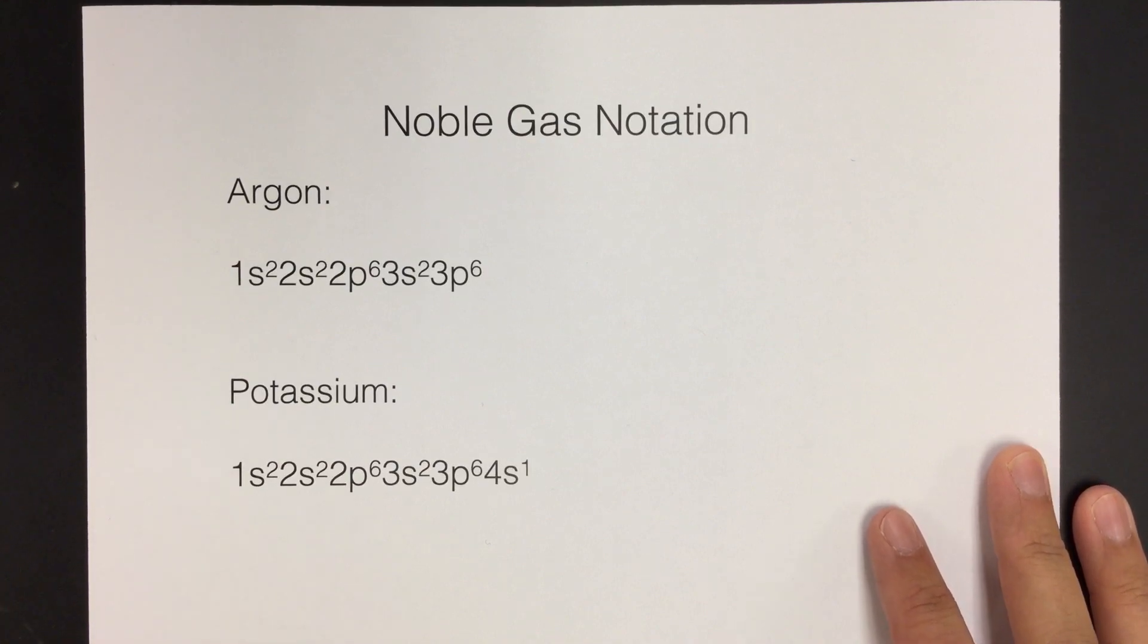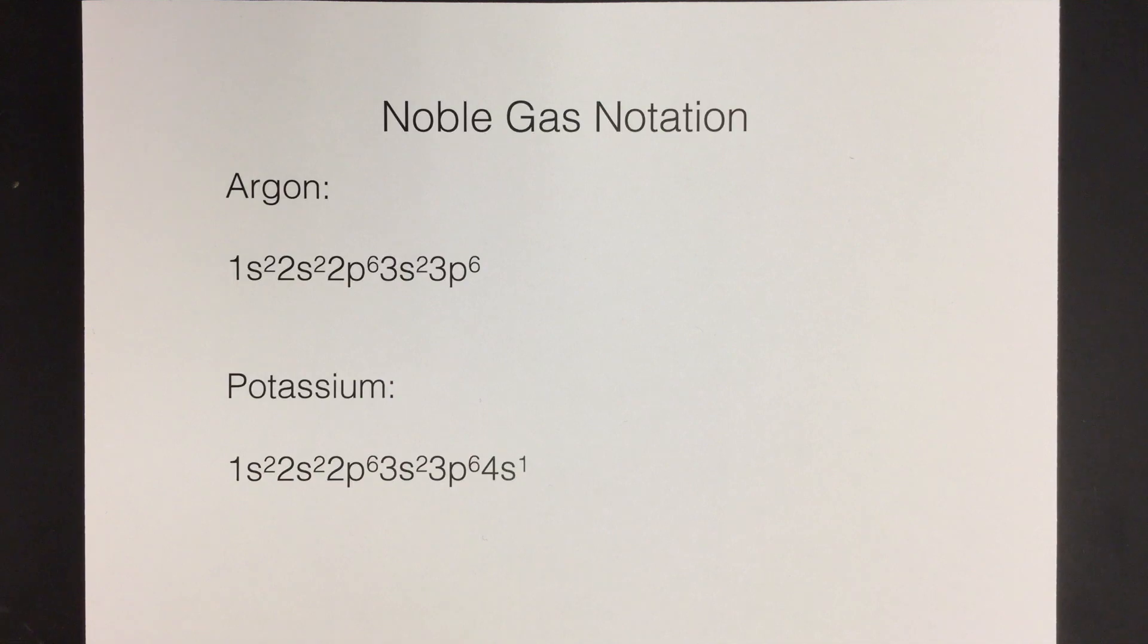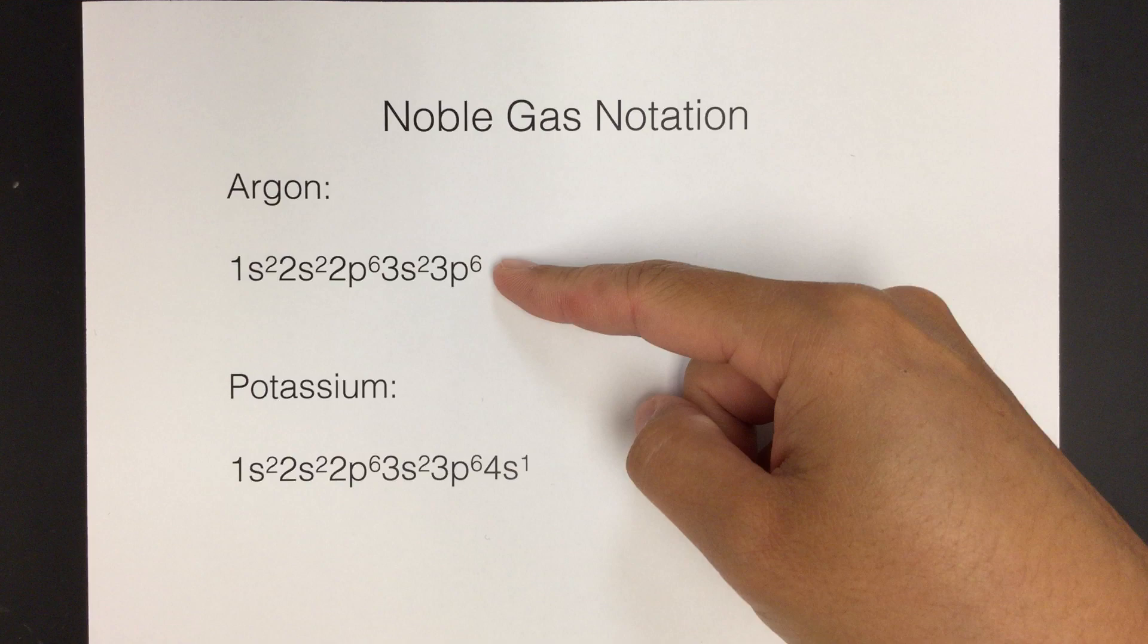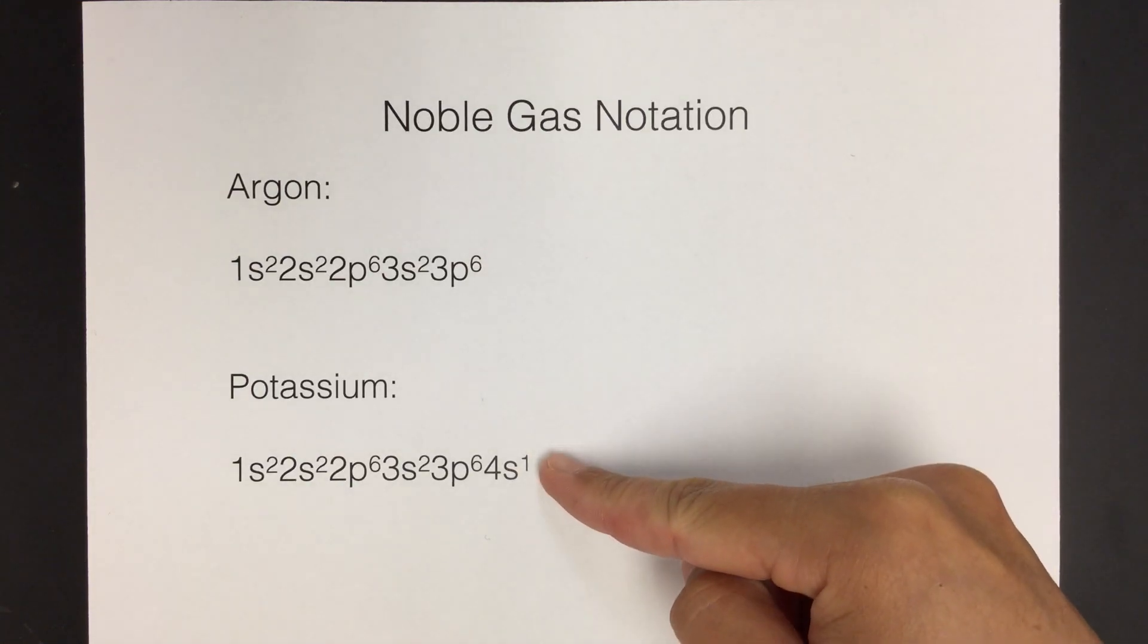So before we do a few homework problems from your noble gas notation assignment, we are going to talk just a little bit about what it is and why it's amazing. So before we knew noble gas notation, if we were to write the electron configuration for argon, it would look like this, and then for potassium it would look like this.